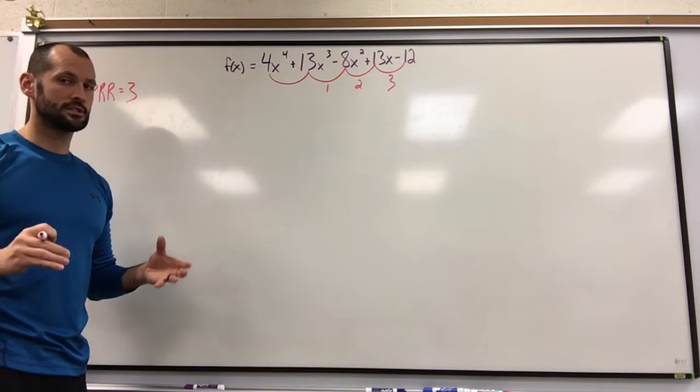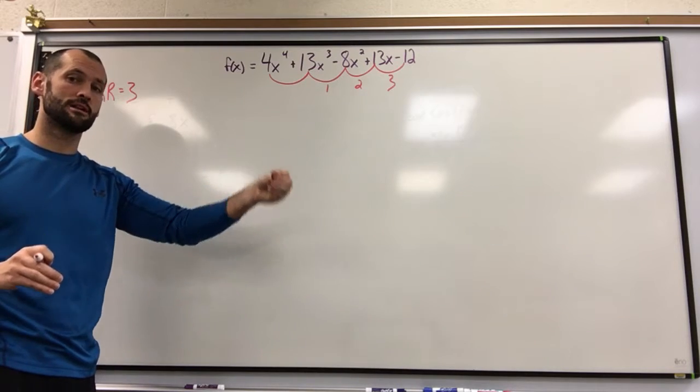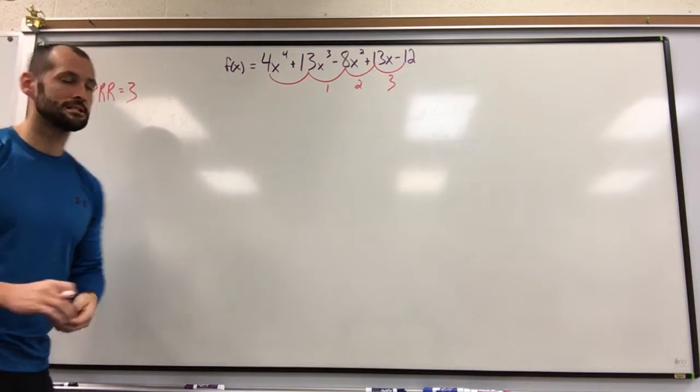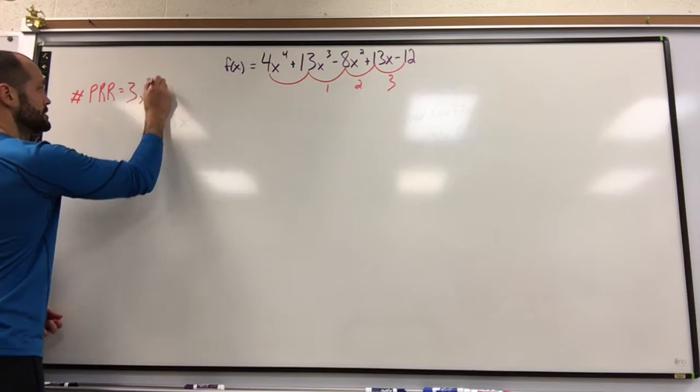Positive to positive, no change. Positive to negative, one change. Negative to positive, two changes. Positive to negative, three changes. Now here's where we got to be careful. That means there could be three potential positive real roots, but Descartes' Rule of Sign says our scenarios run down by two.